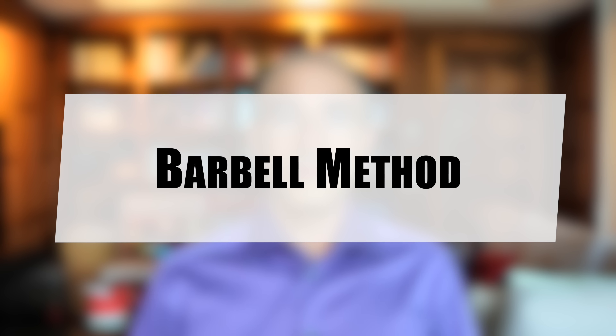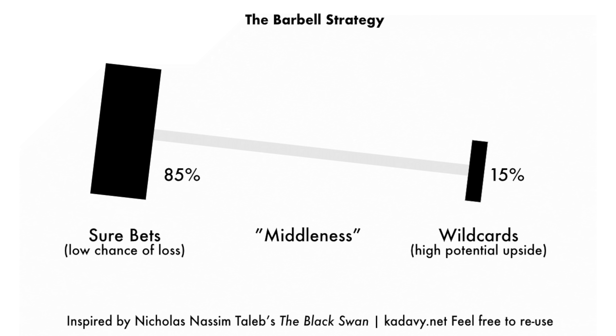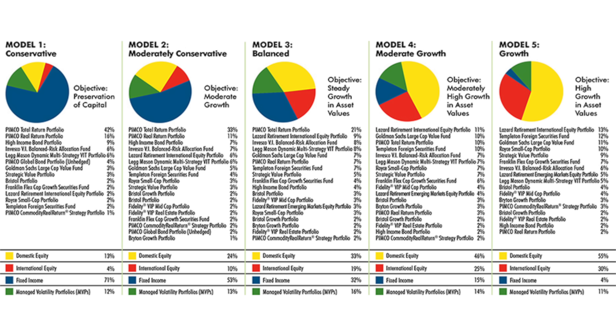The Barbell Method involves a two-pronged approach combining safe and conservative actions with high-risk, high-reward actions. It's about not getting stuck doing nothing, and at the same time not getting swept away into risky action without having a solid, risk-free base. This model was coined by Nassim Nicholas Taleb, a renowned author and risk analyst. It draws inspiration from the physical barbell, with weight distributed at the two extreme ends representing safe and risky choices.